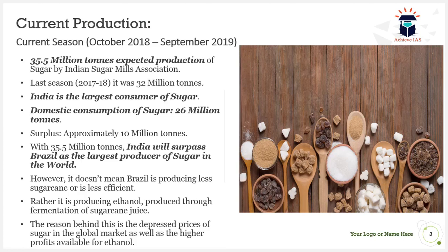Regarding production, it is predicted that in this season ending September 2019, the production of sugar will be 35.5 million tons. This expectation is made by the Indian Sugar Mills Association. Last season, production was 32 million tons, so you can see there is an increase in production of sugar.